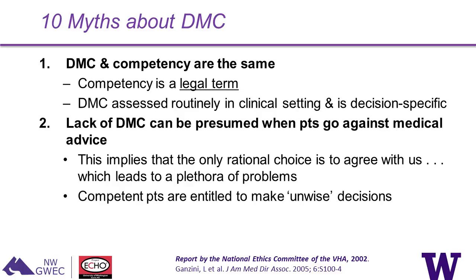Myth two: lack of capacity can be presumed when patients go against medical advice. Competent patients are entitled to make unwise choices. Simply assessing capacity based on a decision you think is not a smart one would lead to a plethora of ethical problems — basically presuming the patient isn't rational unless they agree with you. While a patient's decision may prompt a closer look, the reason you assess capacity is because it's inconsistent with the patient's stated beliefs, or because they cannot meet the criteria for capacity assessment.